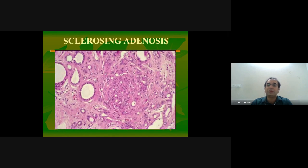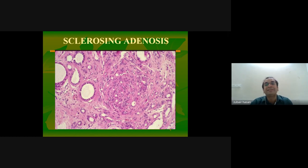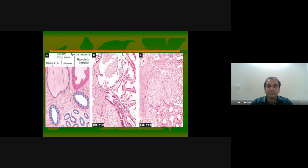Sclerosing adenosis is another condition within fibrocystic change. Adenosis means an increase in the number of acini — small glands — while sclerosing refers to a lot of fibrosis surrounding them. A textbook picture of fibrocystic change shows dilated ducts, fibrous stroma, and apocrine metaplasia.